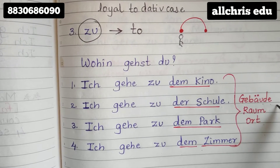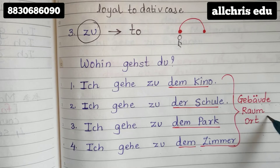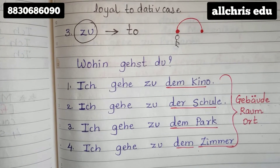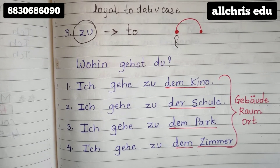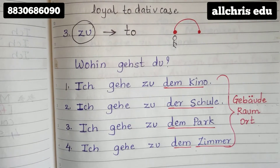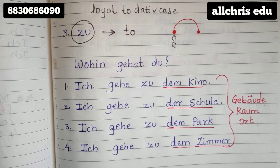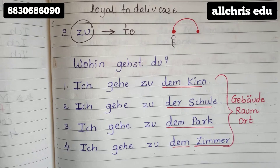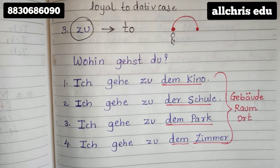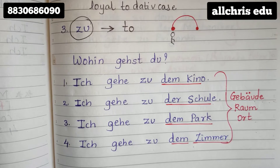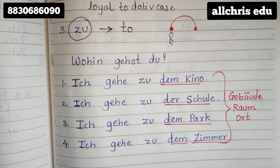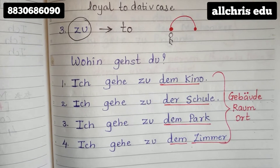Gebäude means buildings. Raum means room — whenever I tell you something students, always try to note it down in your book. Ort means places. Now these places — I don't mean countries or cities. These places are like a park. A park is also a place; it is not a building, it is not a room, but it is a place.